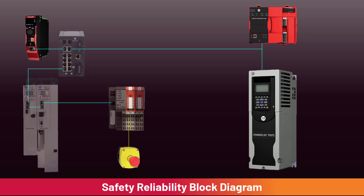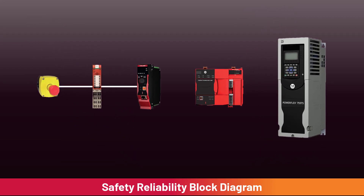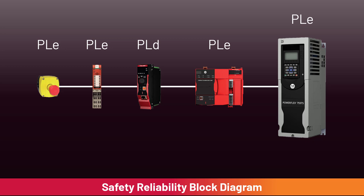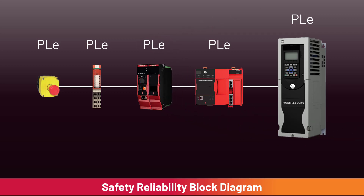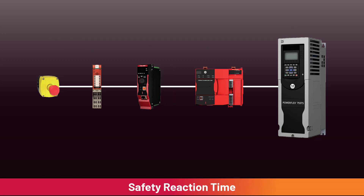Let's review the emergency stop safety reliability block diagram for the combined system. The emergency stop and safety inputs have a PLe rating, but the single GuardLogix 1756-L84ES controller is rated at PLd. The new Compact GuardLogix system uses a PLe-rated Compact GuardLogix controller, and the PowerFlex 755 has a PLe-rated motion monitoring and safe torque off. The PLd controller producing the E-stop signal will limit the overall safety function to PLd. If PLe were required, a safety partner would need to be added to the 1756-L84ES GuardLogix. An additional consideration is safety reaction time.